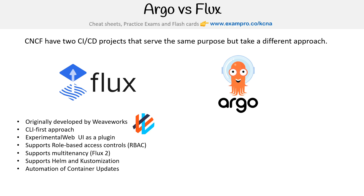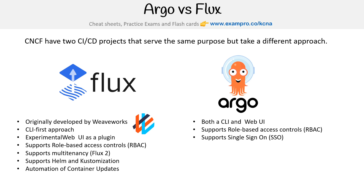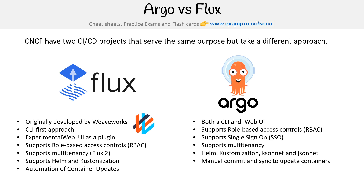Let's take a look at what Argo does. It has both a CLI and web UI, so it's had a little bit more to start with. It supports role-based access controls, single sign-on, multi-tenancy, Helm, Kustomization, Ksonnet, JSON, and manual commit and sync to update containers.